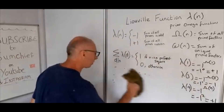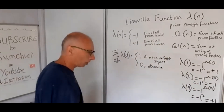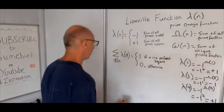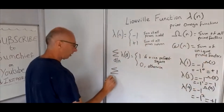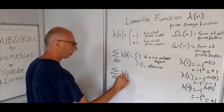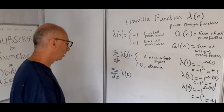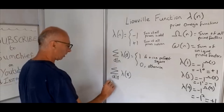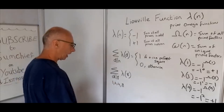Let's try another number — the number 8, which we know is not a perfect square. The divisors of 8 are 1, 2, 4, and 8.